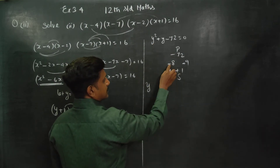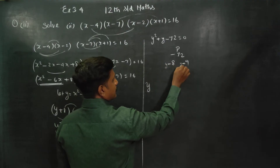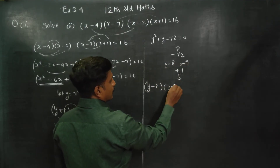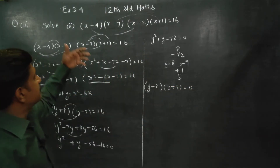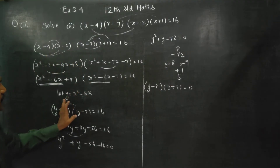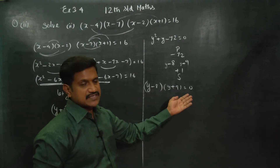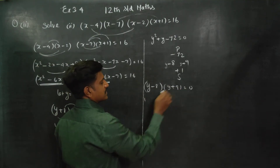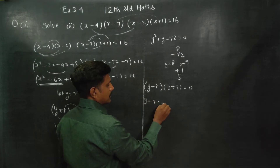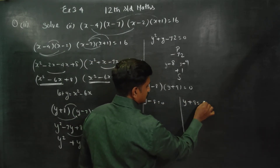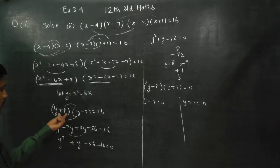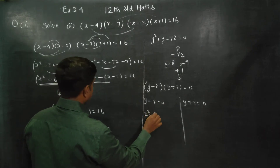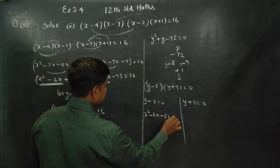y minus 8 into y plus 9 is equal to 0. So y minus 8 is equal to 0, and y plus 9 is equal to 0. Therefore y equals 8, and y equals minus 9. Substituting back: x squared minus 6x minus 8 is equal to 0.